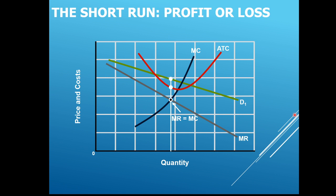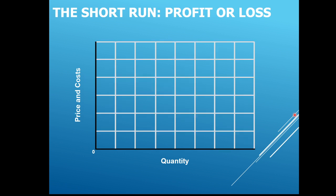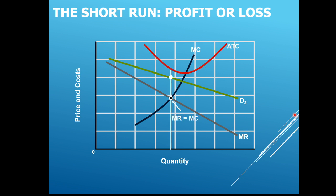From MR equals MC we get our output, cost, and price. The price is above the ATC at that quantity, so that area is our economic profit. You'll notice the area of economic profit is not as large as it was for the monopolist, because the demand curve is highly elastic. This is what the short-run economic profit graph looks like.